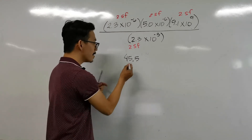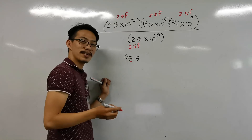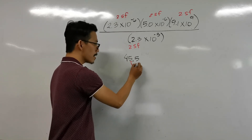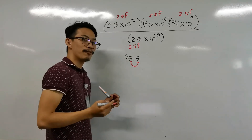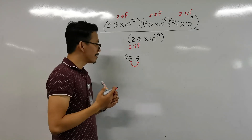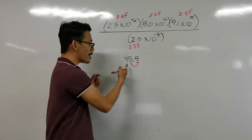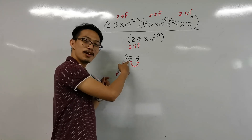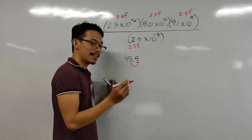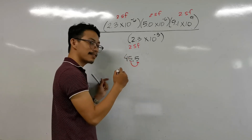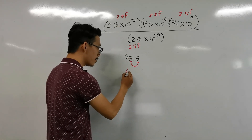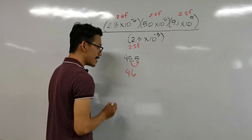That means we look at the first two significant figures: 4 and 5. Take note of the number next to 5 — it is exactly 5. This is a special case. Since the digit is exactly 5, we round up. So our final answer is 46.